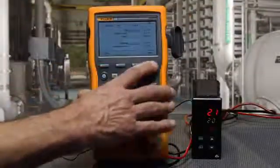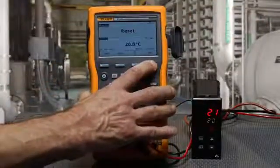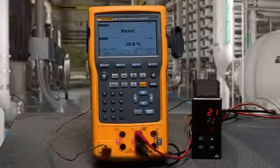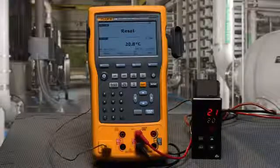Since the set point error and deadband errors are within tolerance, that indicates they meet the test tolerances and pass. That's how you test a temperature switch using the Fluke 754 documenting process calibrator.